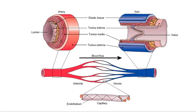The tunica intima includes elastic tissue. The tunica media, or tunica muscularis, is the middle layer, and the tunica externa is the outer layer. In the capillary portion, the endothelium has a special structure — this is important information from histology to understand how endothelium changes under different influences such as toxins.